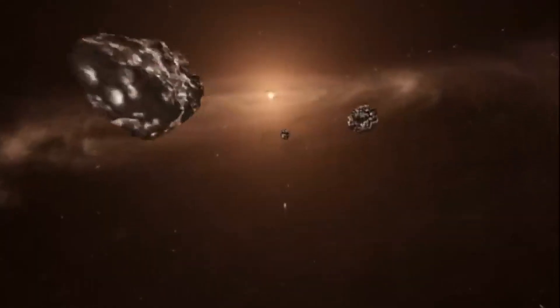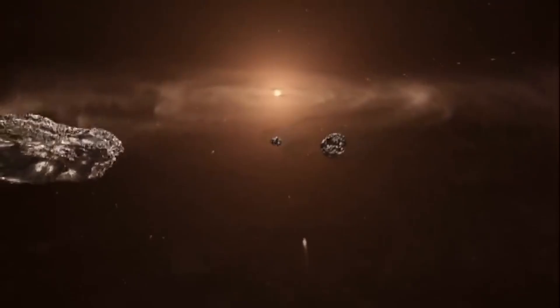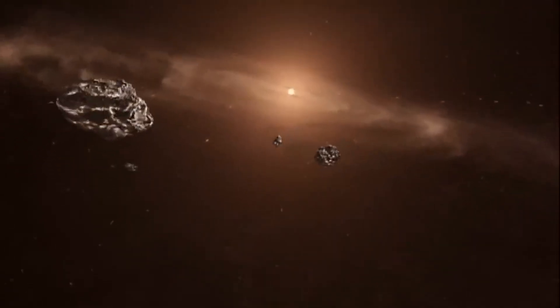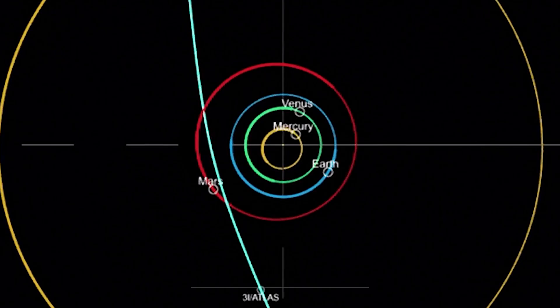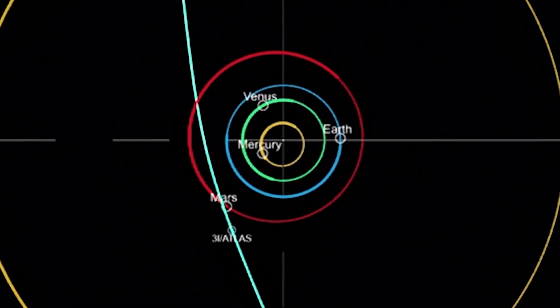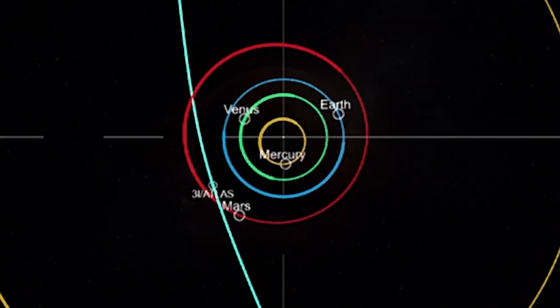Mars, for a brief window, becomes the frontline outpost for humanity's effort to study an interstellar object up close. On October 3rd, 3I/ATLAS will sweep within about 28 million kilometers of the red planet. Close enough for orbiters to aim their instruments, far enough to avoid any dust hazards. The geometry is perfect. While Earth's view fades, Mars' view opens wide.